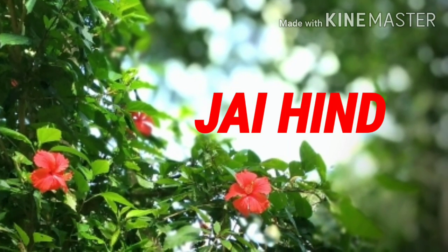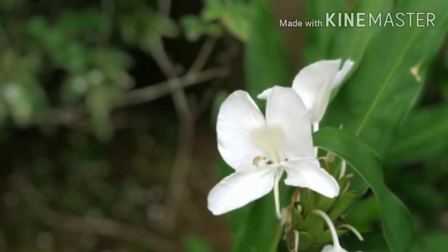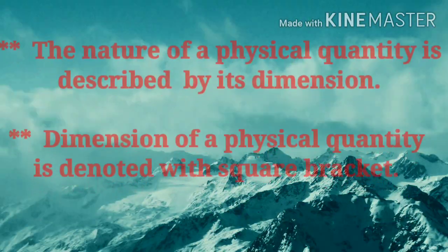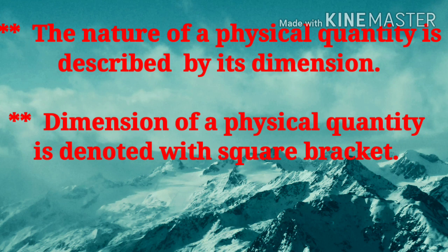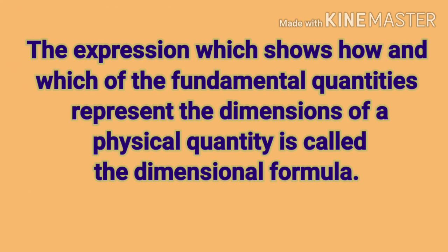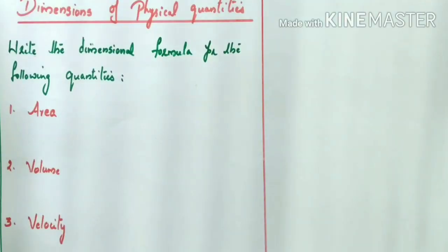Jai Hind, my dear children. Welcome to today's physics class. Today we are going to start the topic: dimensions of physical quantities. The nature of a physical quantity is described by its dimension. The dimension of a physical quantity is denoted with square brackets. The expression which shows how and which of the fundamental quantities represent the dimension is called the dimensional formula.